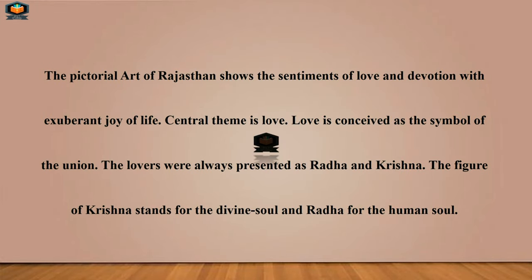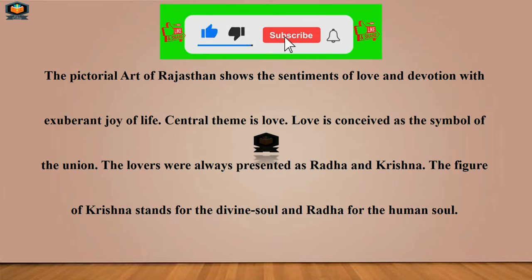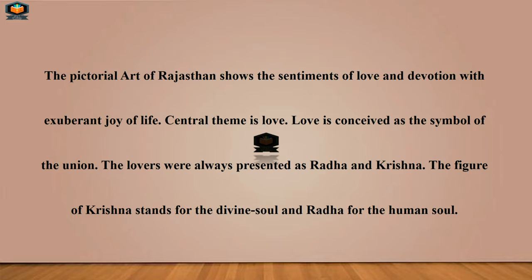The pictorial art of Rajasthan shows the sentiments of love and devotion with exuberant joys of life — 'exuberant' meaning full of energy. The central theme is love, conceived as the symbol of union. The lovers were always presented as Radha and Krishna in these paintings.